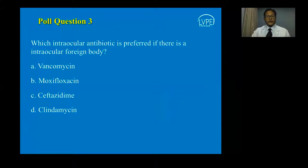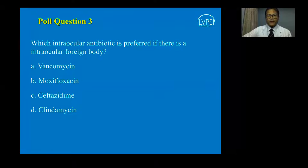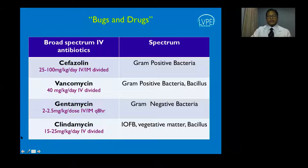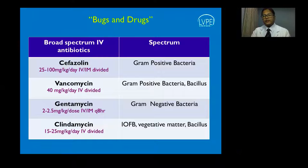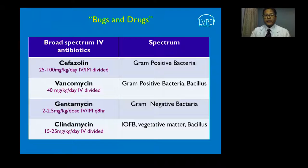We need broad spectrum coverage for patients of trauma, especially those with contaminated ocular injuries. You need to give a wide range of protection for gram-positive and gram-negative bacteria. If you suspect an intraocular foreign body, clindamycin is the drug of choice. However, trauma can have contamination with Bacillus, therefore vancomycin is also preferable.